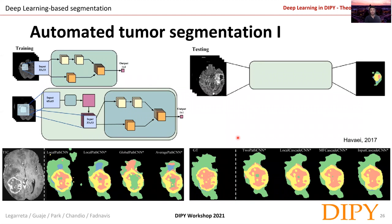Here we can see one of the first approaches that tried to solve this problem. This was a paper proposed by Harvey in 2017, also including help from Yoshua Bengio, one of the fathers of deep learning. This paper proposed a cascade architecture that separates the analysis into a global area and a local area, as we can see with these two patches in the image. The combination of the global and local analysis produces a nice and very accurate segmentation of the tumor. Here we can see results of different variations of this architecture alongside the ground truth from the dataset.